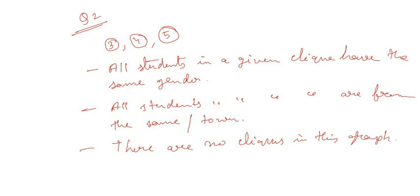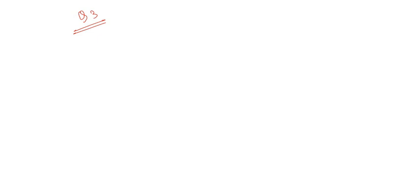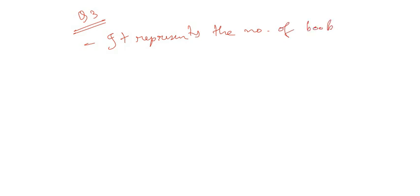For question number three, the correct option is: it represents the number of books in which authors i and j have collaborated.